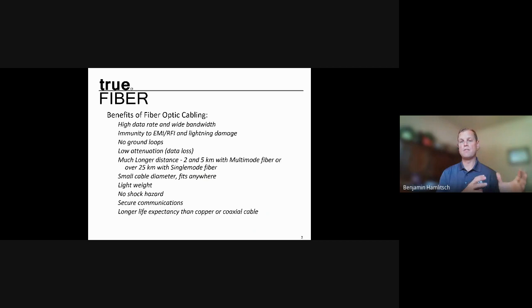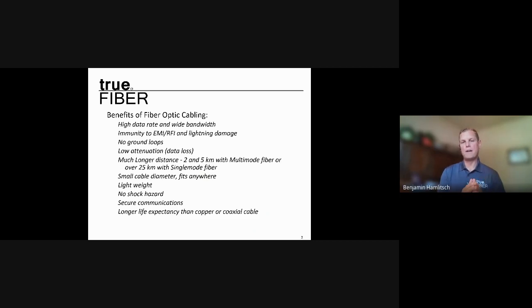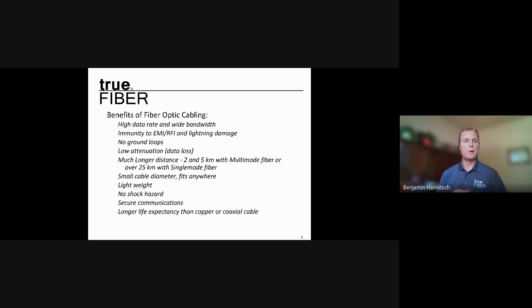Another wonderful benefit is immunity to EMI and RFI — things you experience with copper cabling. If you run copper cabling too close to an electrical wire, you can get interference. That doesn't happen with optical fiber because it uses glass, not metal. There are also no ground loops, and fiber has very low attenuation, which allows data to travel longer distances with less loss.